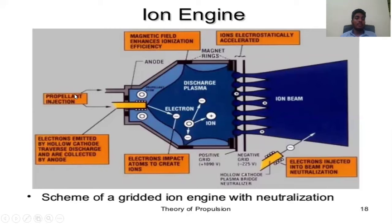From the propellant injection, electrons emitted by a hollow cathode traverse the discharge and are collected by the anode. Electrons impact atoms to create ions. Electrons are injected into the beam for neutralization via a hollow cathode plasma bridge neutralizer.